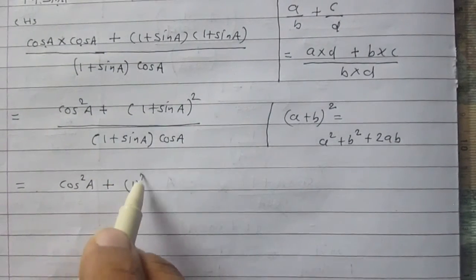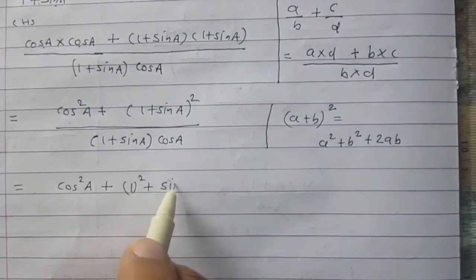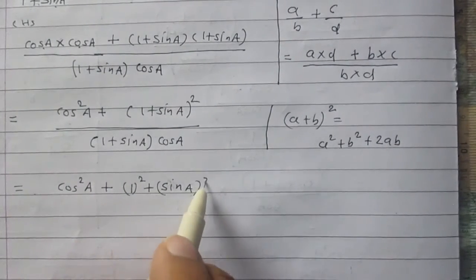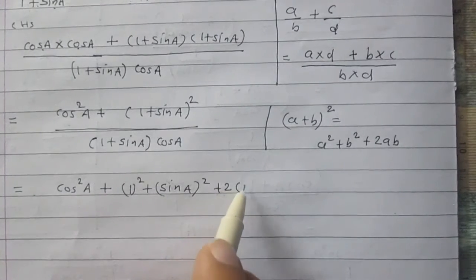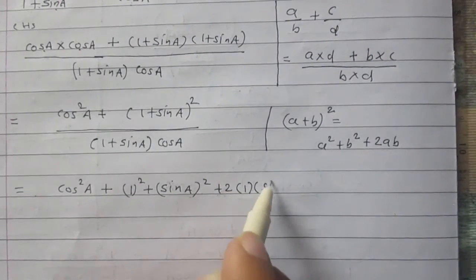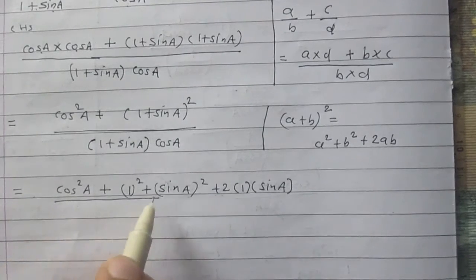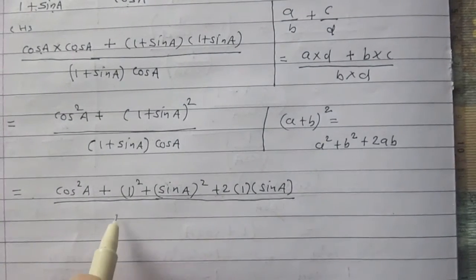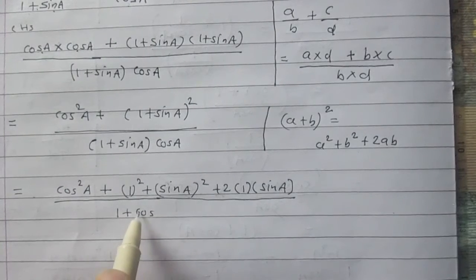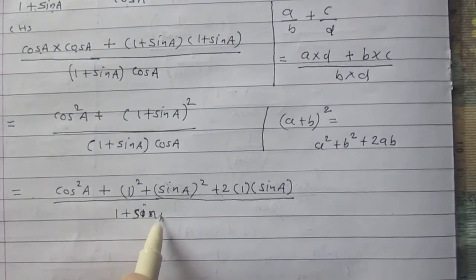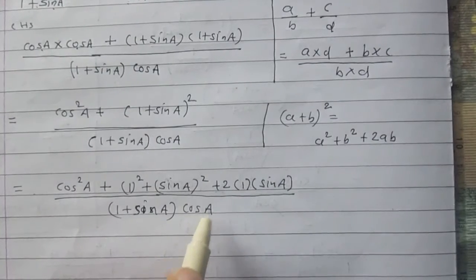So it will become 1 squared, then sin A squared — that is B squared — and twice of A multiplied by B. The denominator remains as it is: 1 plus sin A times cos A.